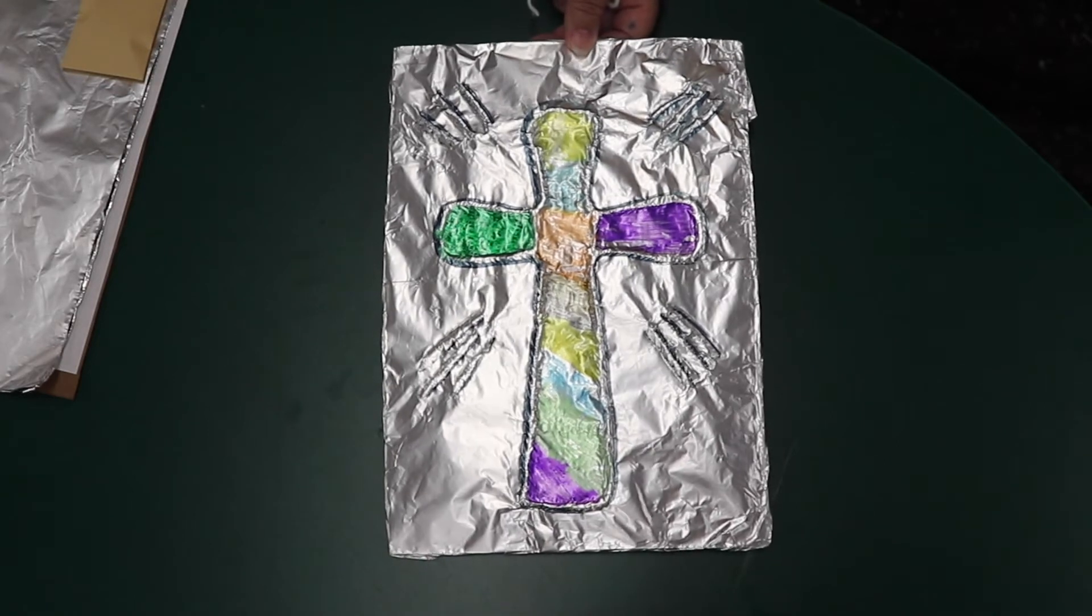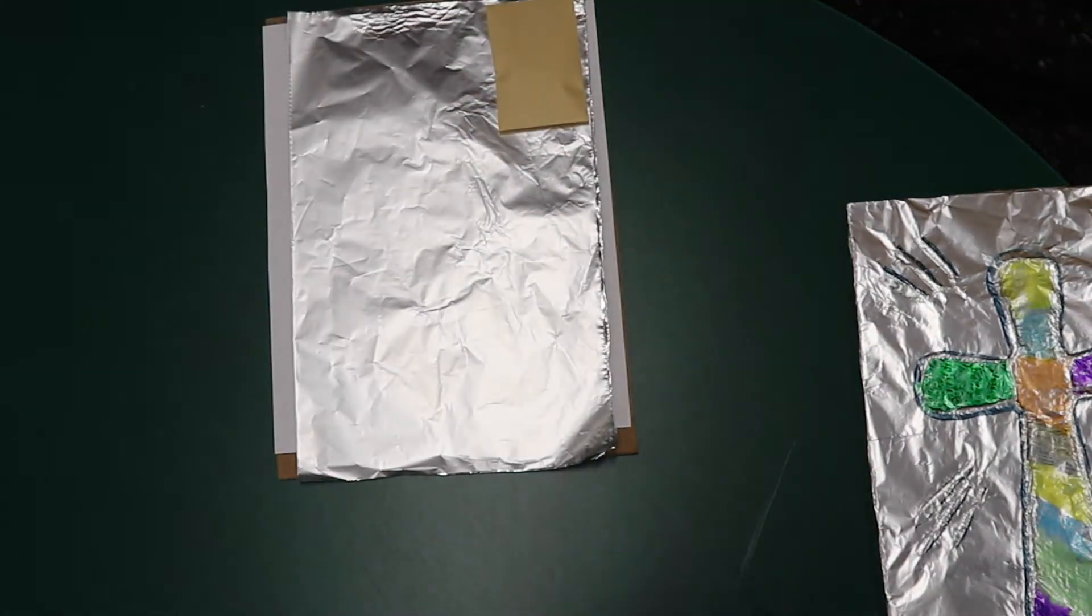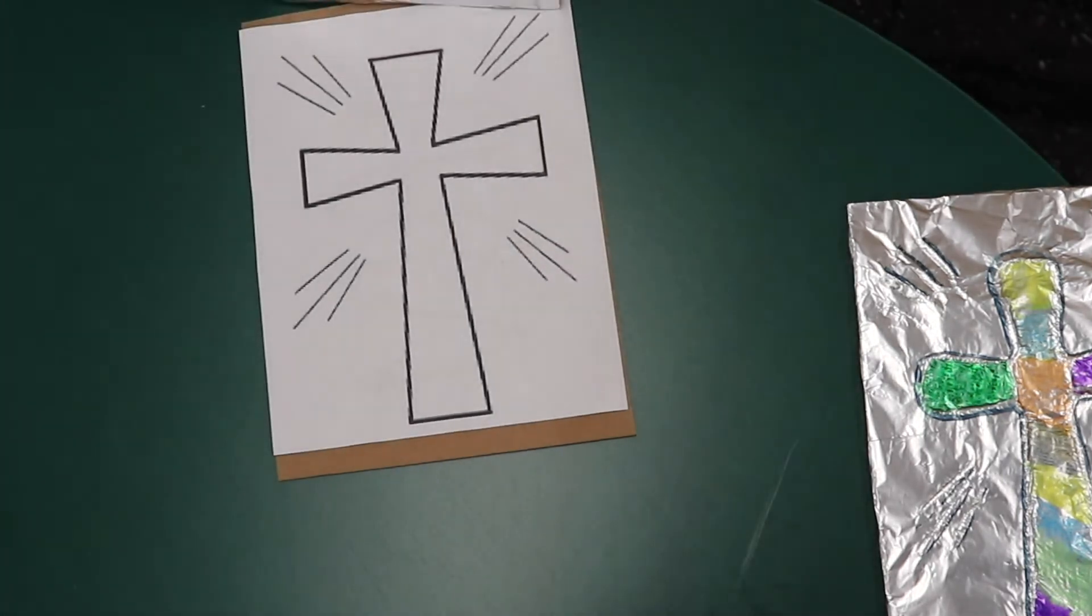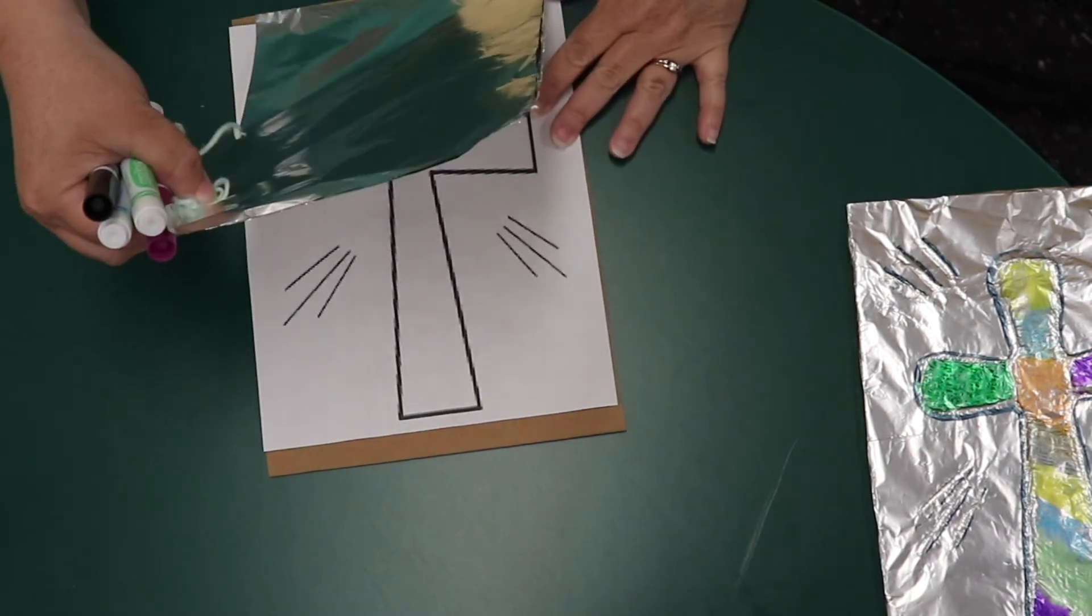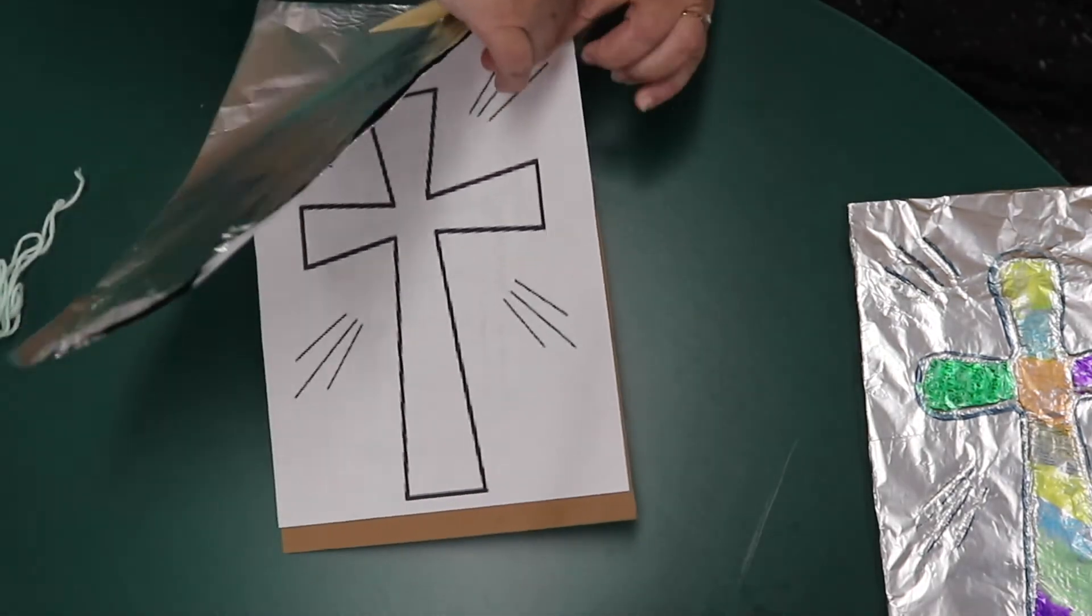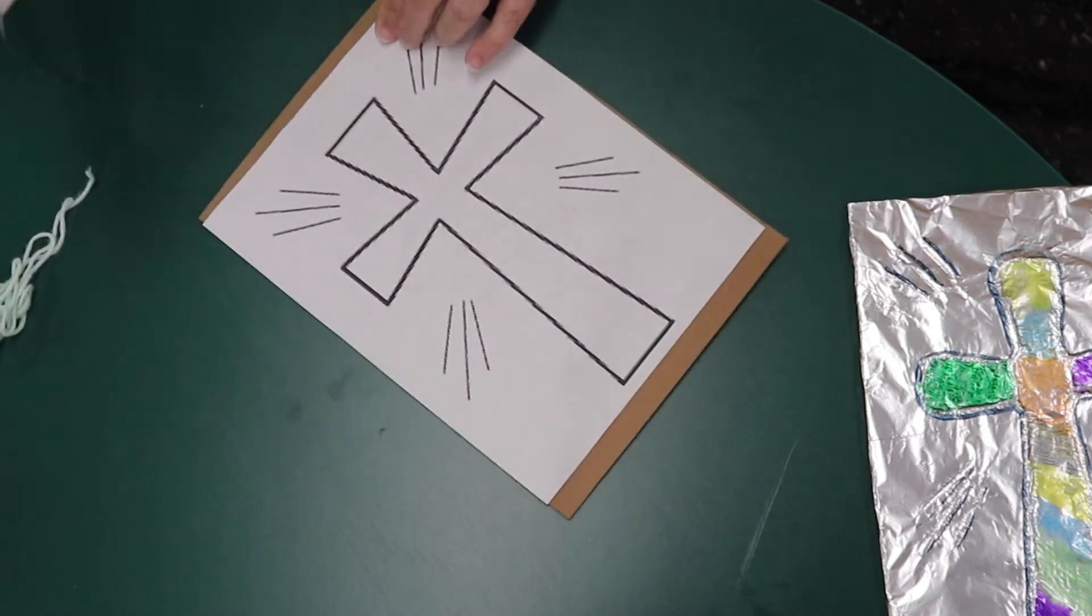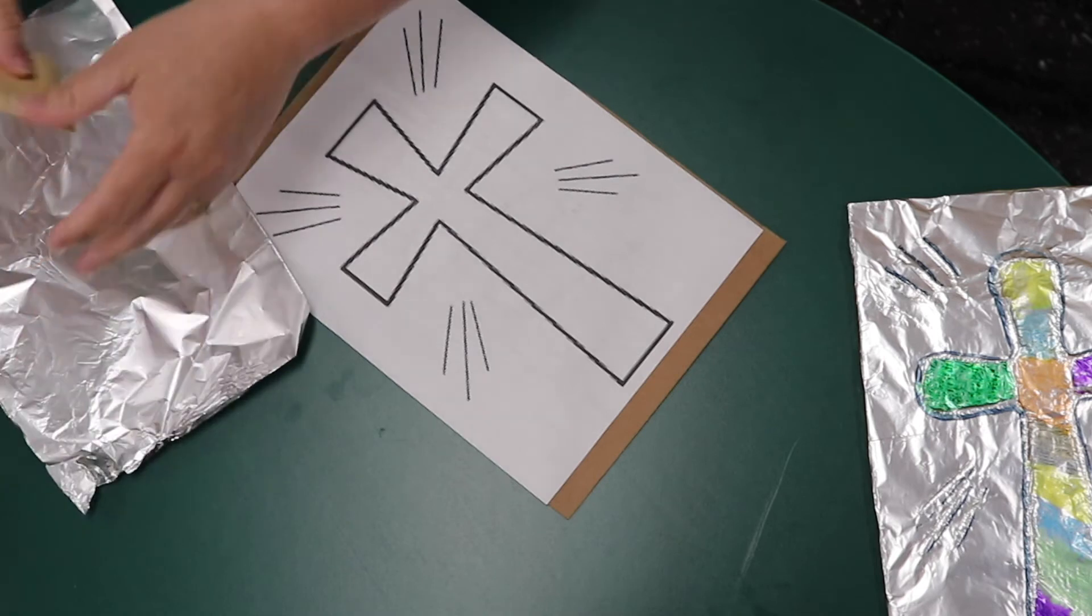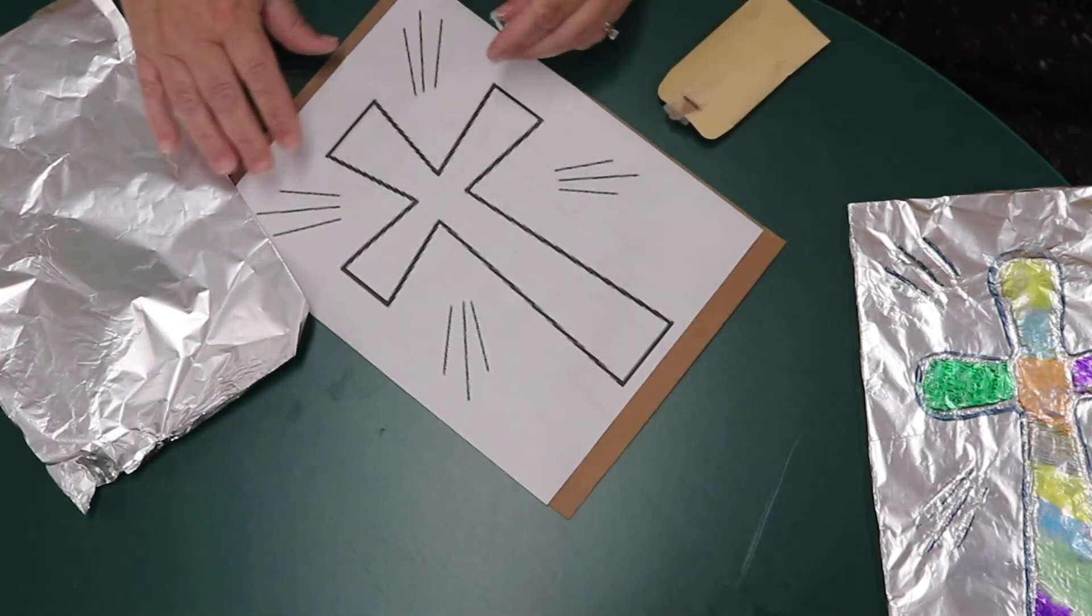Each of you got a little packet that has a little envelope on it, a piece of tin foil, and a cardboard picture with a cross glued to it. You're going to take off your tin foil and your envelope, and inside your envelope is a string.